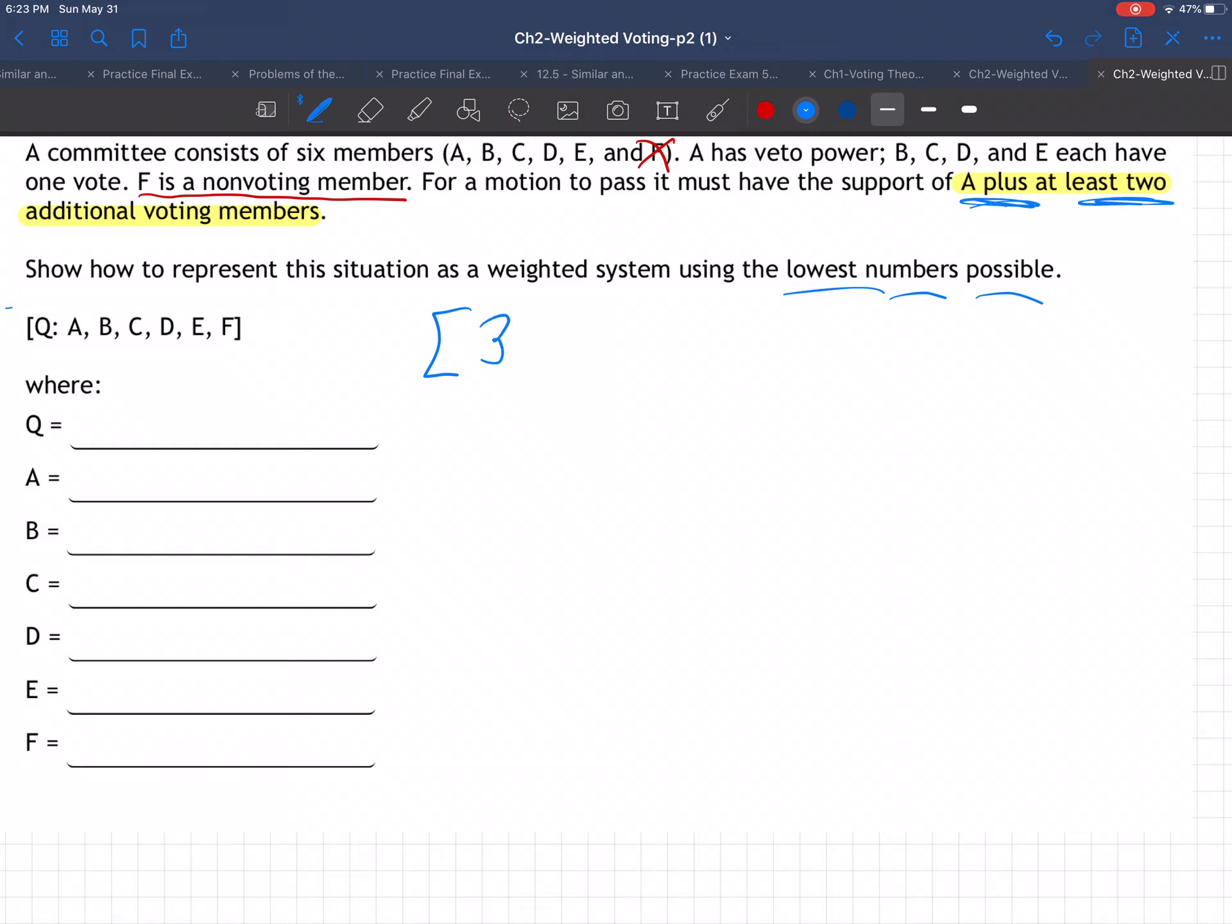So let's say 3. Let's just start with that. Maybe our quota is 3. Remember, that's the number needed to pass anything. That's what the quota is. It's the number needed to pass anything. So maybe you need 3 to pass anything in this system. And then each of the people just has one vote. 1, 1, 1, 1. Of course, F's got to be a 0, right?